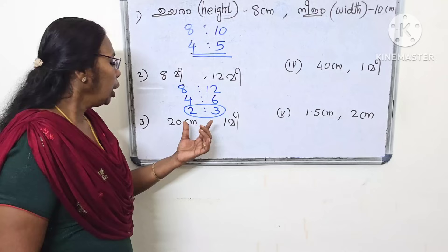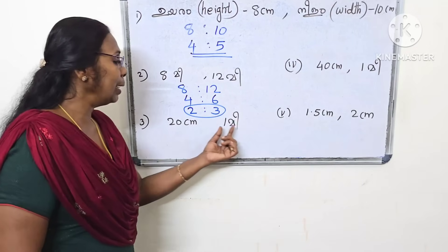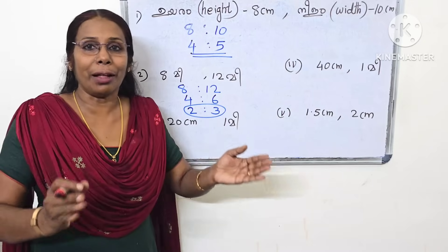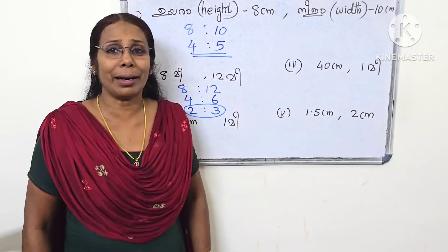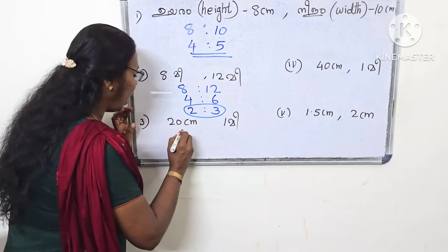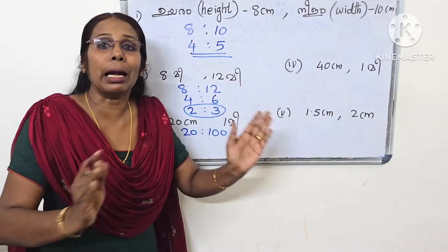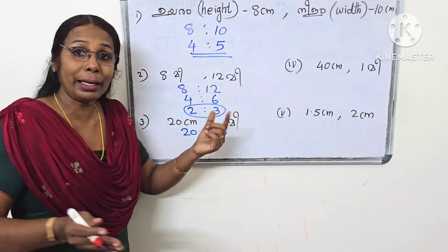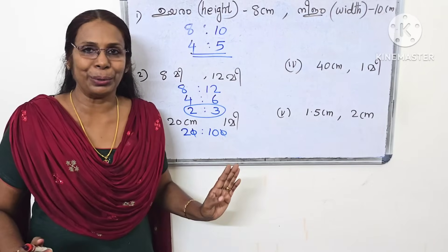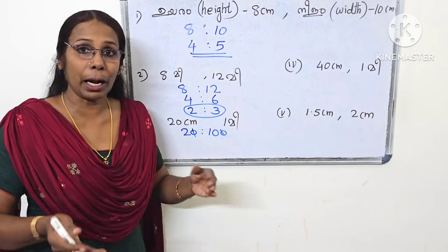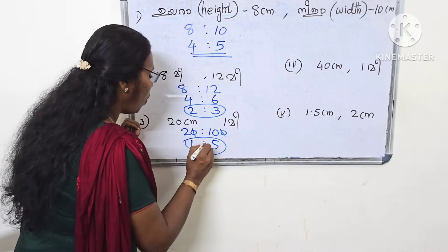The answer is 20cm to 1 meter. Now we need to convert units. This is centimeters, and this is meters. 1 meter equals 100cm. So what do we do here? We get 20 is to 100. Both divided by 10, and then again divided by 10. These are two even numbers, so we get 1 is to 5.